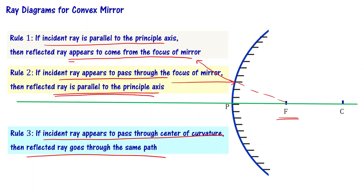Here, everywhere we say 'appears to come' because the focus and the center of curvature are behind the mirror. For that reason, the rays appear to come from or appear to pass through those points. This is the difference from the concave mirror rules. We are going to explain again when drawing ray diagrams for the different cases.